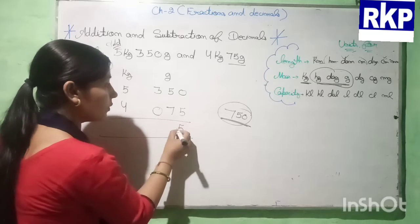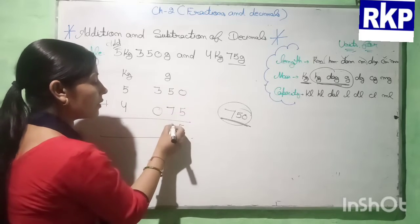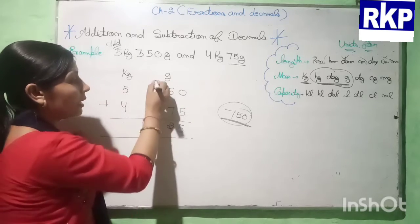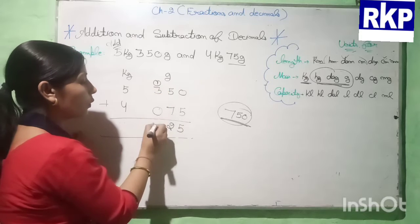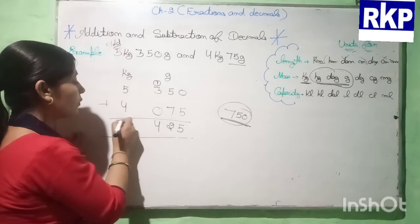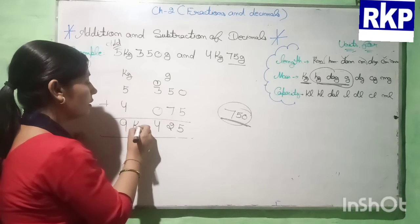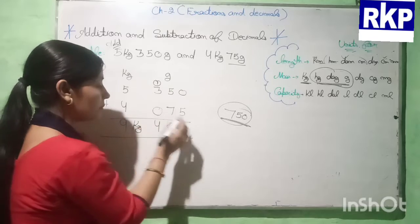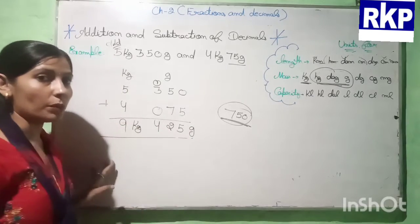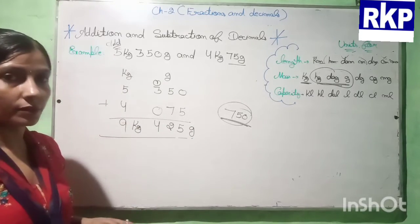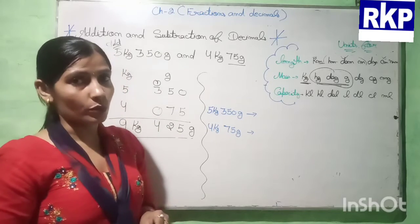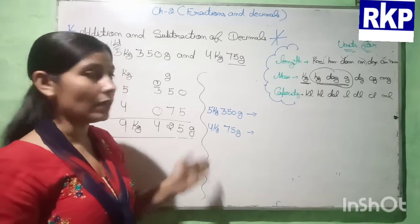Now we add: 5 and 7 is 12, 1 will be carry; 1 and 3 is 4; and 5 and 4 is 9. So 9 kilograms 425 grams will be our answer. We can solve this question by another method also.